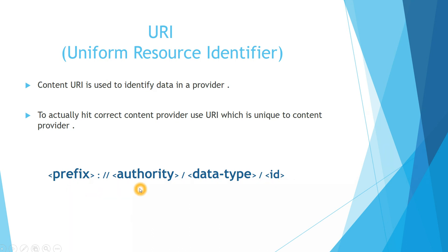and authority is the name of the content provider — for example it can be contacts, browser, or gallery. That particular name is its authority. Data type is the data type